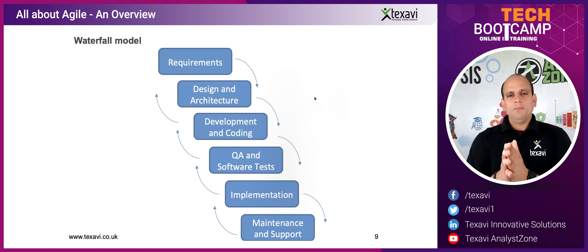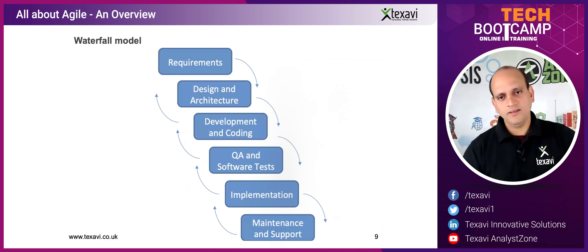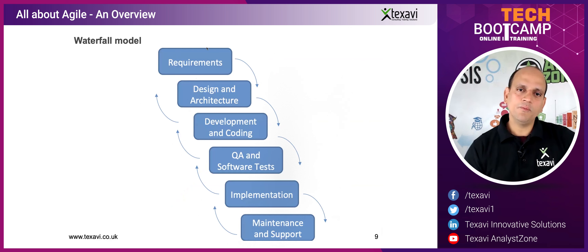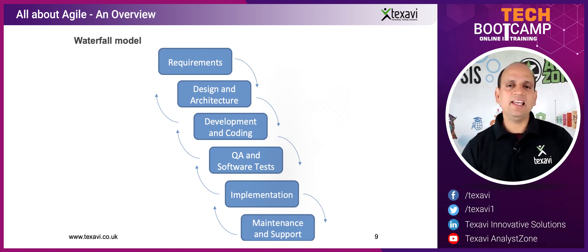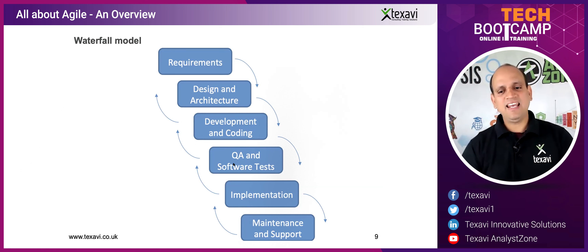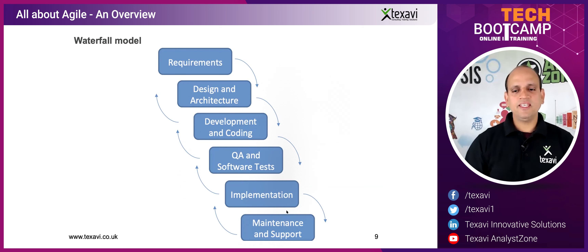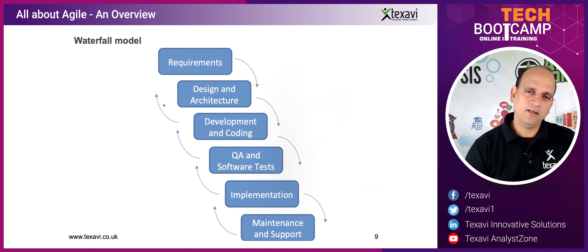In the waterfall model, water pours from the top step all the way down — that's the analogy. It starts with requirements, then moves to design — high-level and low-level architecture — then coding, then testing, then deployment, then maintenance. Each phase must be completed before moving to the next. You cannot have the water flowing back — that's the core problem with waterfall.